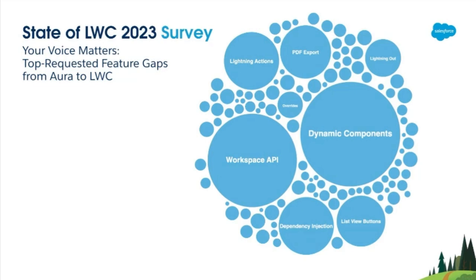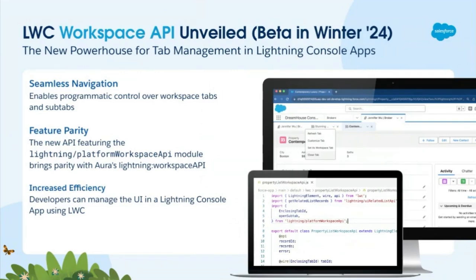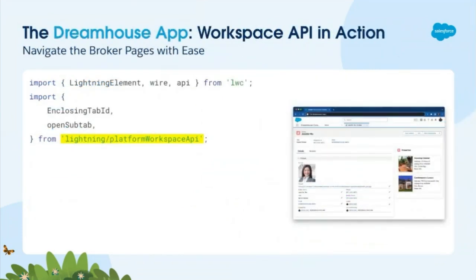Today, Alice presented dynamic components — one of the first feature gaps we needed to resolve — and I'm now thrilled to dive into Workspace APIs. It's available as beta for the Winter 24 release, and this feature improves how you manage tabs and subtabs in your console apps all within the LWC ecosystem. You no longer need to struggle with Aura's lightning workspace API. This new API is all about giving you the control you've been asking for, while maintaining high performance and efficiency. In this example, I'm just importing some methods from the lightning platform workspace API — this is all LWC now.